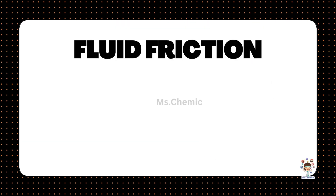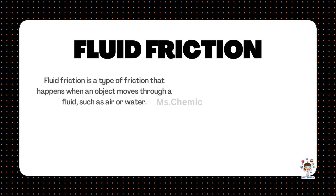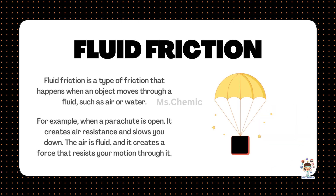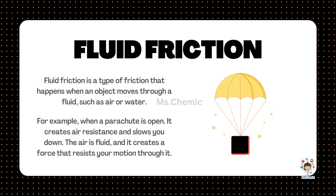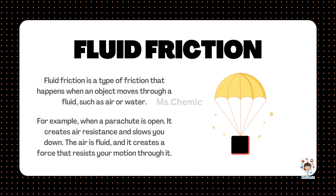Fluid friction is a type of friction that happens when an object moves through a fluid, such as air or water. For example, when a parachute is open, it creates air resistance and slows you down. The air is fluid, and it creates a force that resists your motion through it.